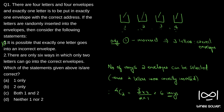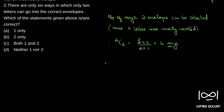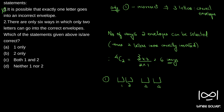We can select two envelopes in six ways. In each of these six pair cases, we are left with two other envelopes. In each selection, there is only one manner in which two letters can be inserted correctly and two letters inserted incorrectly. So that gives only six possibilities such that exactly two letters go into the correct envelopes.